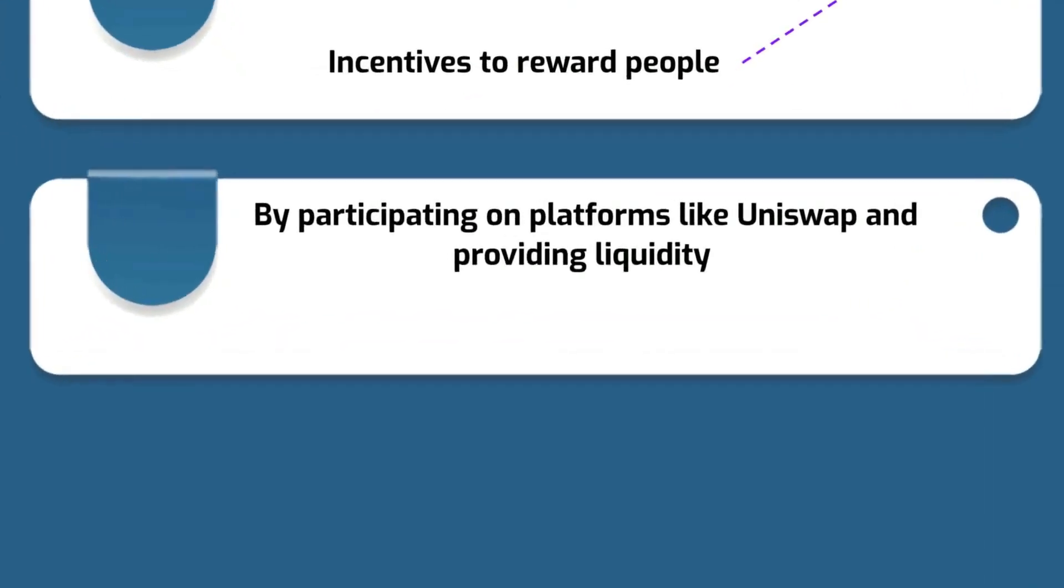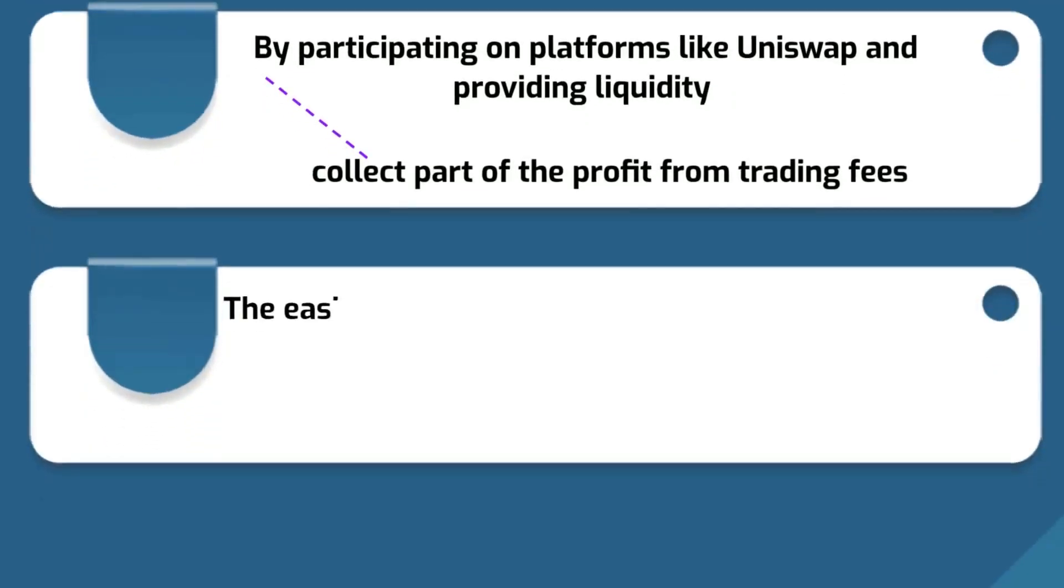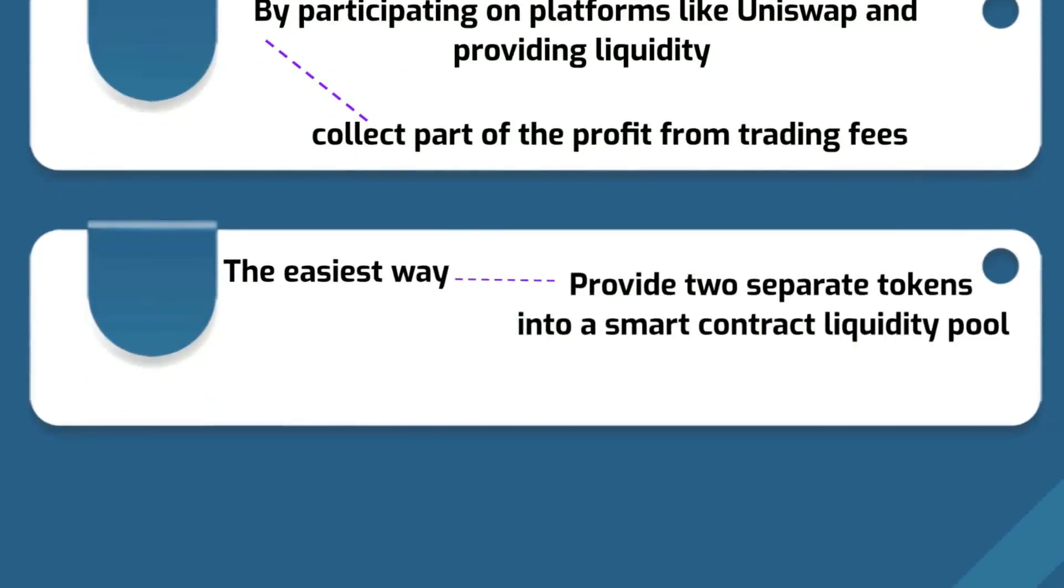By participating on platforms like Uniswap and providing liquidity, people can collect part of the profit share from trading fees from trades that are happening. The easiest way to do that is to provide two separate tokens into a smart contract liquidity pool of your choice and leave them there to help swaps execute.